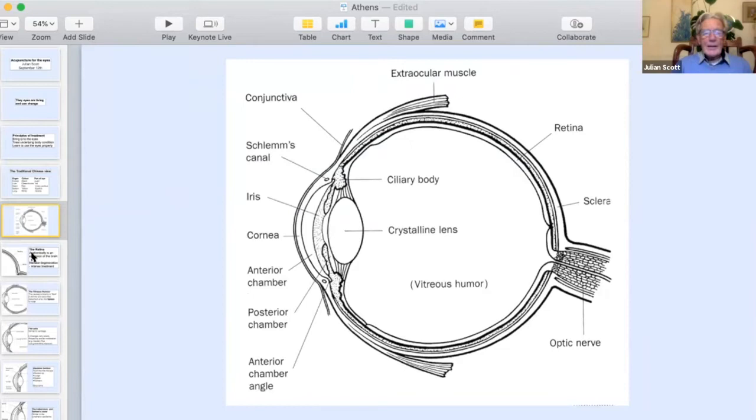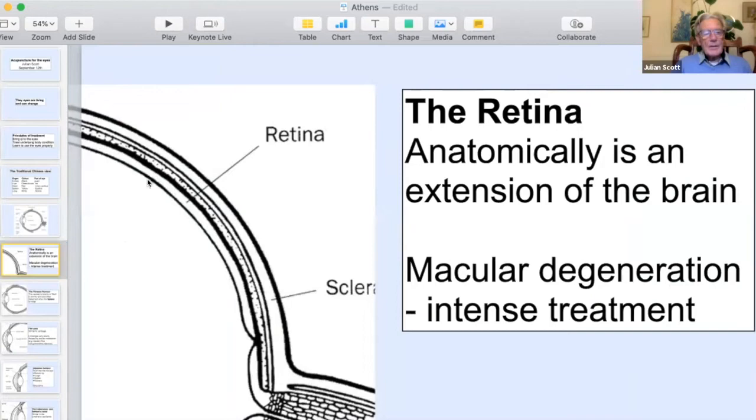So I've got a diagram of the eye with all the bits and pieces on it. Working from the back and the deepest one, we've got the retina. The retina is basically, anatomically, an extension of the brain. And one of the commonest diseases which you will come across is macular degeneration, usually age-related macular degeneration. And of course, age relates to the kidneys, and the brain relates to the kidneys too. And so it's got a lot of similarities with dementia, with Alzheimer's disease, which again is a primary cause of kidney deficiency.